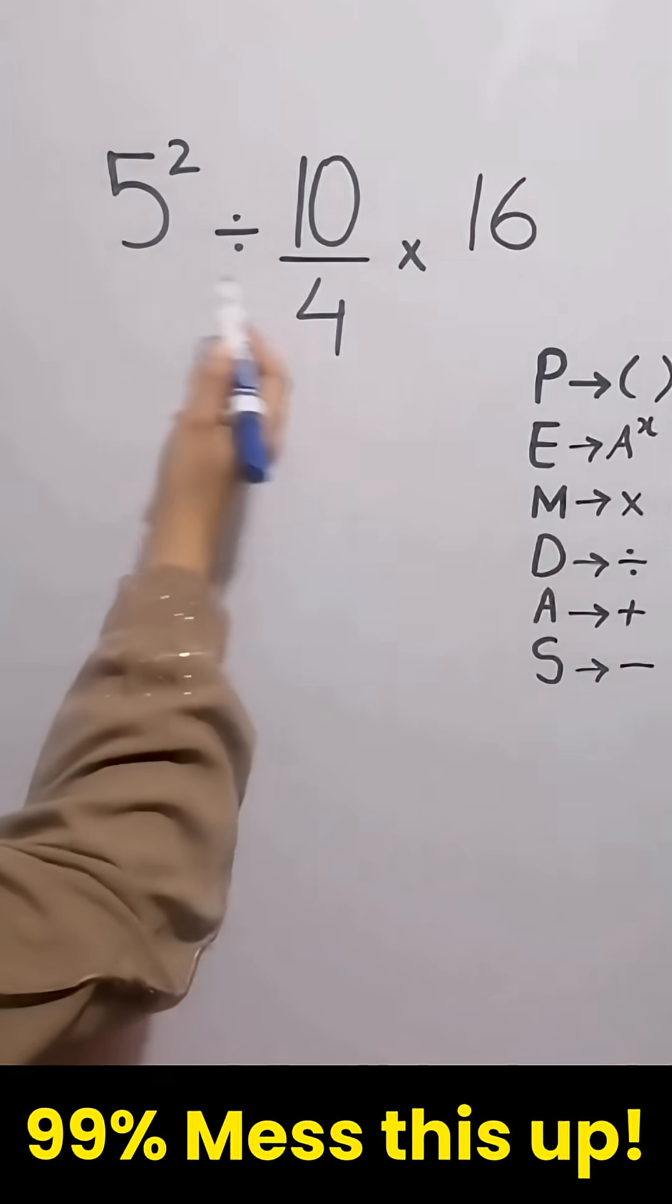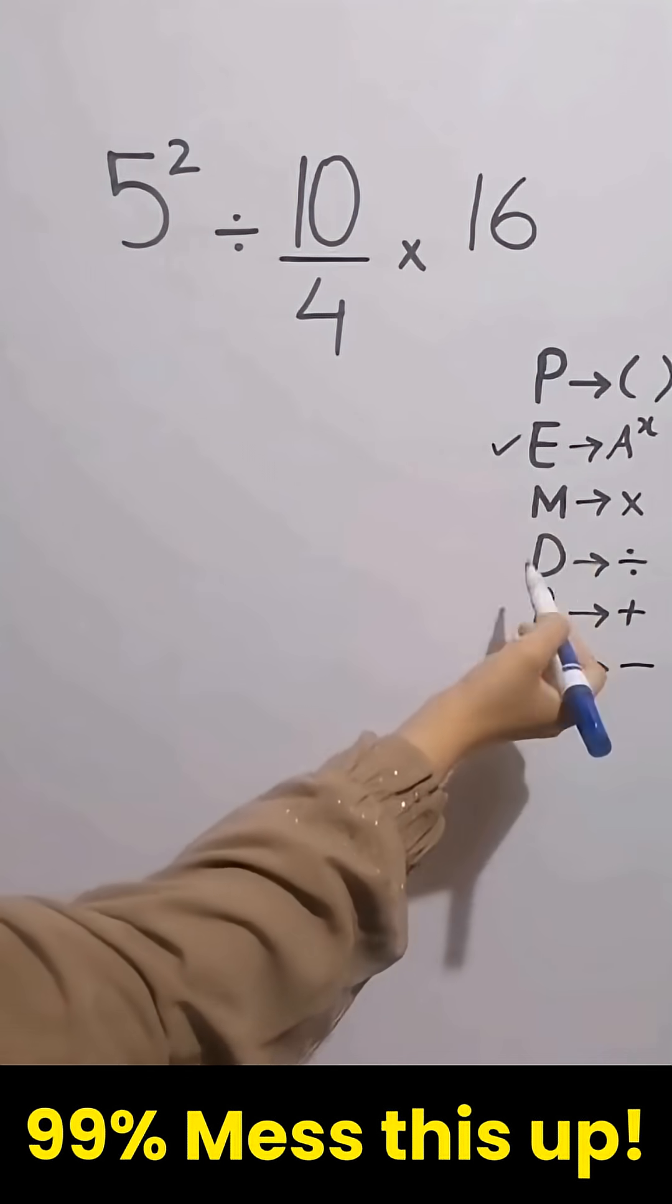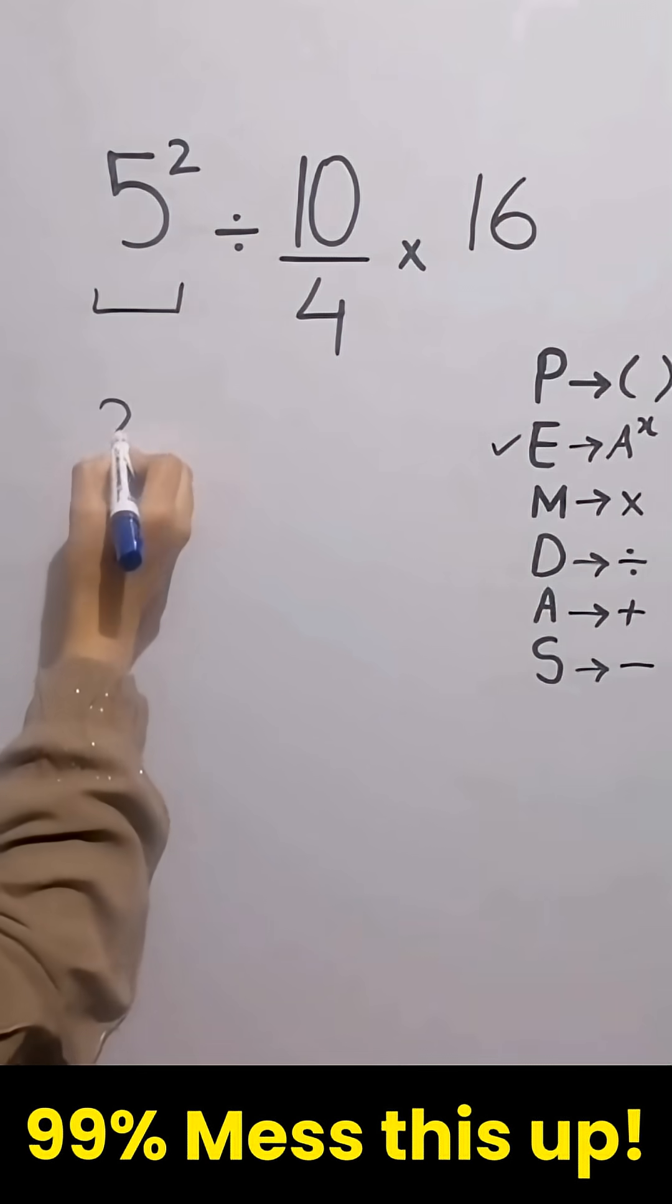First we must start with the exponent because in this expression, exponent has a higher priority than the other operations. So 5 times 5 equals 25.